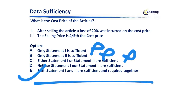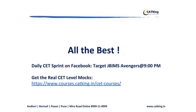Data sufficiency is very easy to score and very time-saving since it does not consume a lot of time. You can use the saved time on data interpretation or reading comprehension questions, which are very lengthy. Make sure you attempt these five to ten questions and score them correctly. I hope this session has helped you understand what data sufficiency is and how you can score in it. Please subscribe to the channel and don't miss any videos from the CET daily series — we'll be covering verbal, logical reasoning, quants, data interpretation, and visual reasoning.